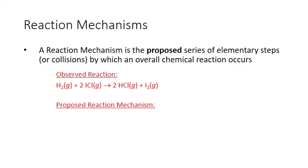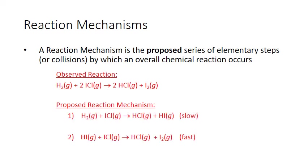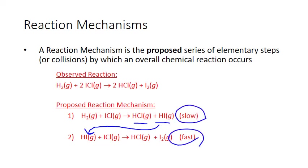Let's look at one possible mechanism for this reaction. First, hydrogen can collide with one iodine monochloride molecule, producing one molecule of hydrogen chloride and one of hydrogen iodide. The hydrogen iodide can then collide with another molecule of iodine monochloride in a second step to produce more hydrogen chloride and an iodine molecule. Each elementary step represents an individual collision that occurs as part of the net reaction and cannot be broken down into simpler steps. Notice that each step is also classified as slow or fast, based on predictions of the activation energy for the transition state of each individual collision.